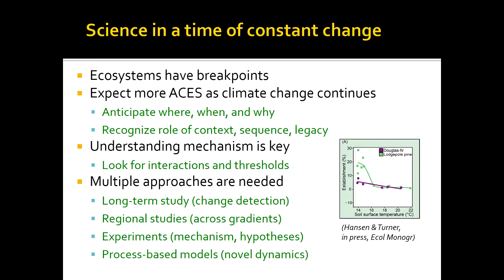We need to think about our science in a time of constant change, recognizing that ecosystems may have breakpoints. We should expect more ACEs as climate change continues — knowing where, when, and why is especially important, recognizing the contingencies. Context matters. Sequence matters. Legacy matters. Understanding mechanisms is key: identifying thresholds, such as soil moisture controlling whether a forest can recover. We will need multiple complementary approaches — long-term studies to detect changes, regional studies with variance across gradients, experiments that get at thresholds and mechanisms, and process-based models that allow for novel dynamics and incorporate mechanisms at the ecological scale.